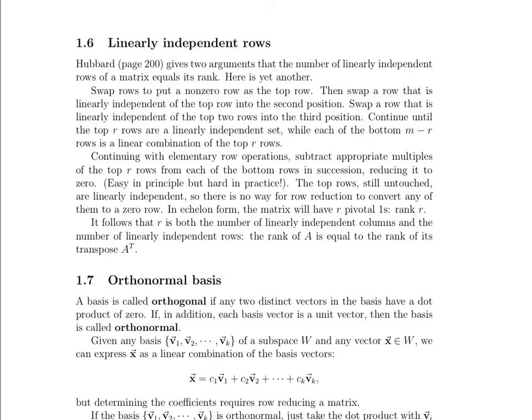Then things start getting tricky. You want to swap rows so that you have something that's linearly independent of the top two rows into the third position. It's very difficult. This is not a particularly easy process because you'll frequently be using row reduction to figure out what is a linear combination of something else. Anyway, you keep doing this until you have the top r rows are a linearly independent set.